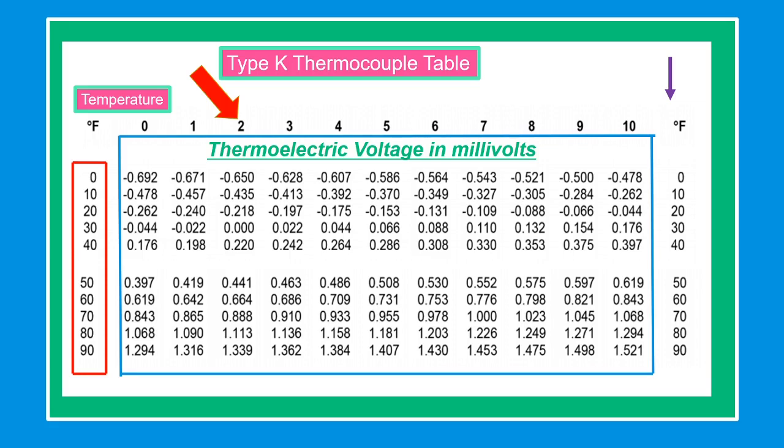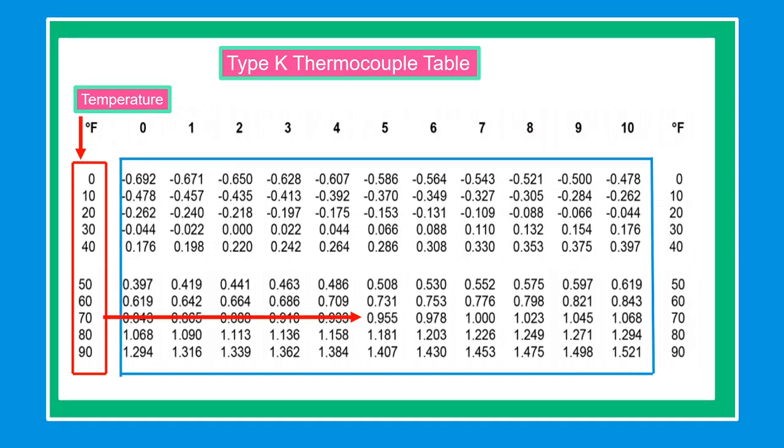On the inside values are thermoelectric voltage in millivolts. Example is 0.67 millivolts. I point the arrow towards 0.955 millivolts from 70 degrees Fahrenheit, then another vertical arrow from number 5. What is the temperature? 70 plus 5 is 75 degrees Fahrenheit, and the reading of the voltmeter should be 0.955 millivolts.